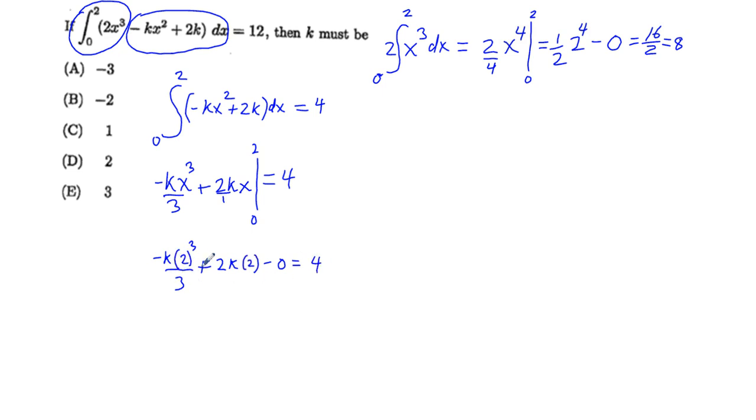So we can just go ahead and factor out a k from this thing. So we would have k times negative, and this is going to be 8 thirds, plus 4k. Remember we factored out k, we're just going to say plus 4 is equal to 4.